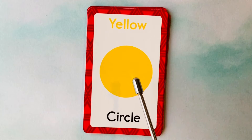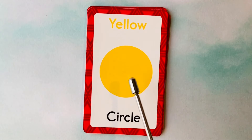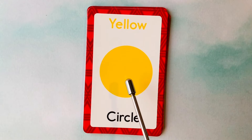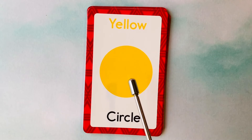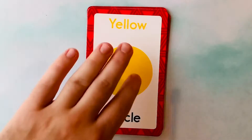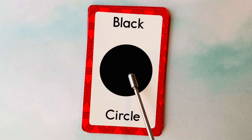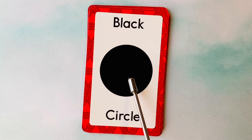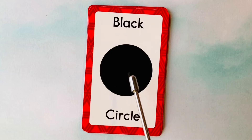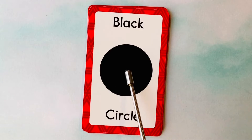This is a circle. What color is this circle? It's a yellow circle. This is a yellow circle. This is also a circle. What color is this circle? It's a black circle. This is a black circle.